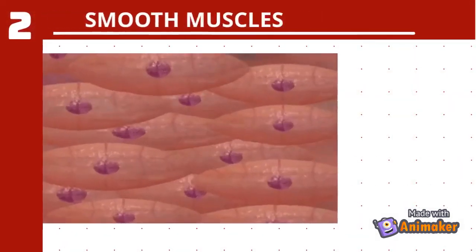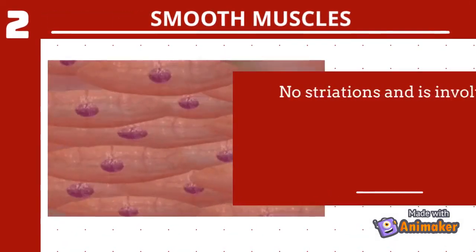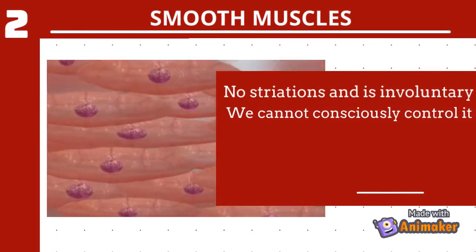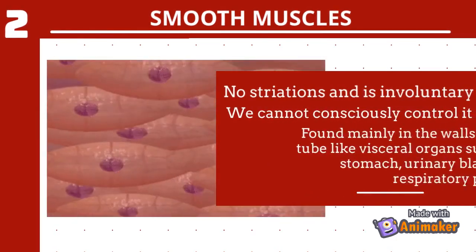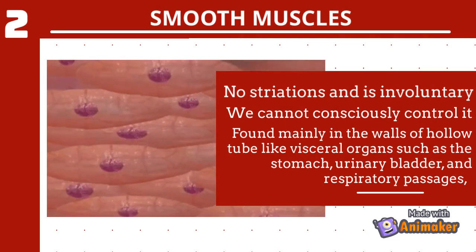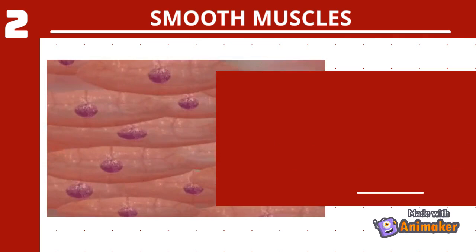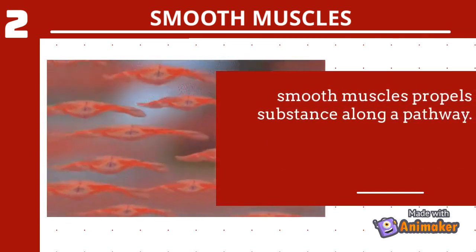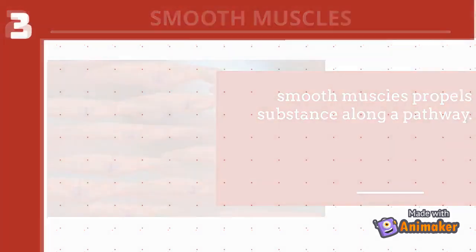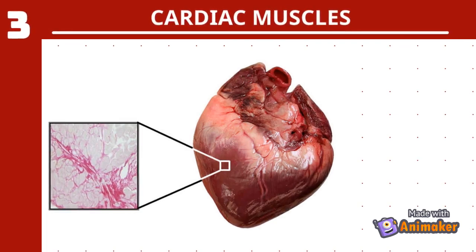The second type is smooth muscle. This muscle is nonstriated and is involuntary, meaning we cannot consciously control it. It is found mainly in the walls of hollow tube-like visceral organs such as the stomach, urinary bladder, and respiratory passages. Smooth muscles propel substances along the body.